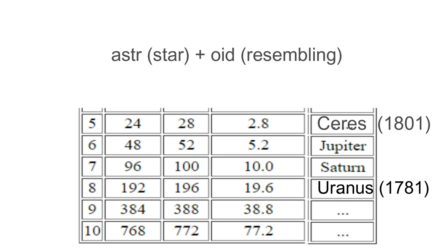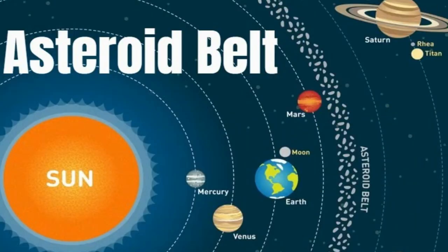Astro means star, and oid means resembling. So what was found in 2.8 space was a bunch of asteroids circling around the sun, which we now call asteroid belt. I hope this background history helps you understand the TOEFL lecture better.